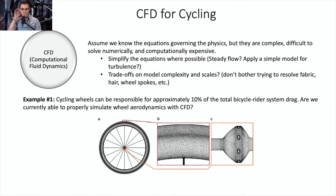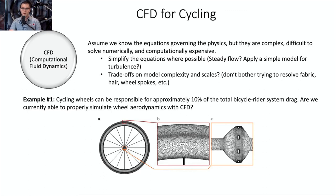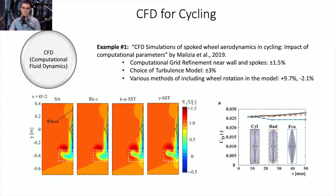An example: I've yet to see a numerical study that resolves fabric-level details, hair, or wheel spokes on a cyclist. Wheels can be responsible for about 10% of total bicycle-rider system drag. A paper by Malaysia in 2019 covered CFD simulations of spoked aerodynamic wheels. They found that computational grid refinement caused drag results to vary by plus or minus 1.5%, and just choosing a different turbulence model produced plus or minus 3% variation in aerodynamic drag on a single solitary wheel.